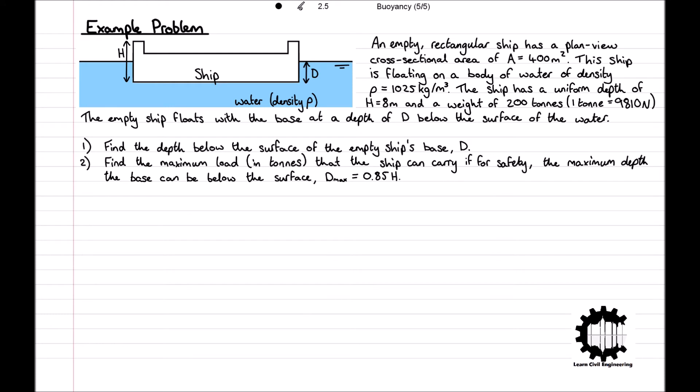The diagram shows an empty rectangular ship with plan view cross-sectional area A = 400 m². So if you looked down on the ship from above, it would cover a rectangular area of 400 m², and this ship is floating on water with density ρ = 1025 kg/m³. The ship has uniform depth h = 8 meters and weight 200 tons, and note that 1 ton equals 9810 newtons.